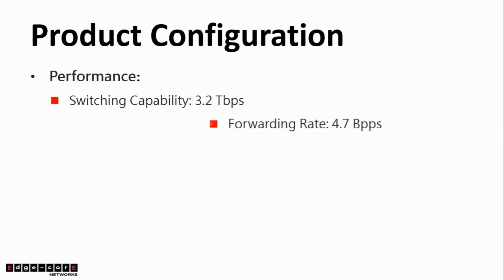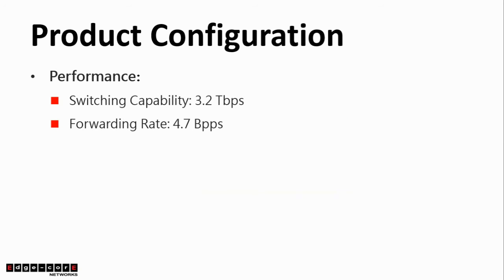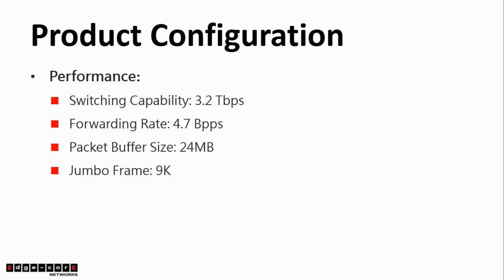For the performance, 3.2Tbps is the switching capability, and the forwarding rate is 4.7 billion packets per second, 24MB for the packet buffer size, and jumbo frame support.